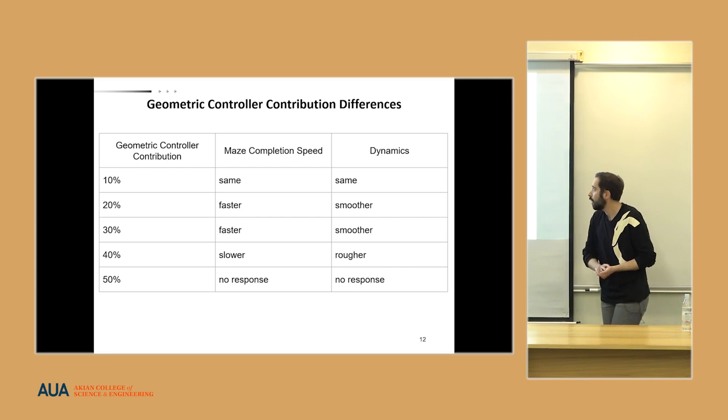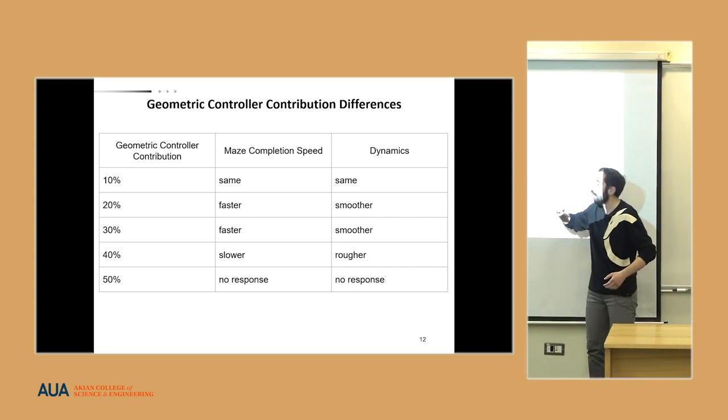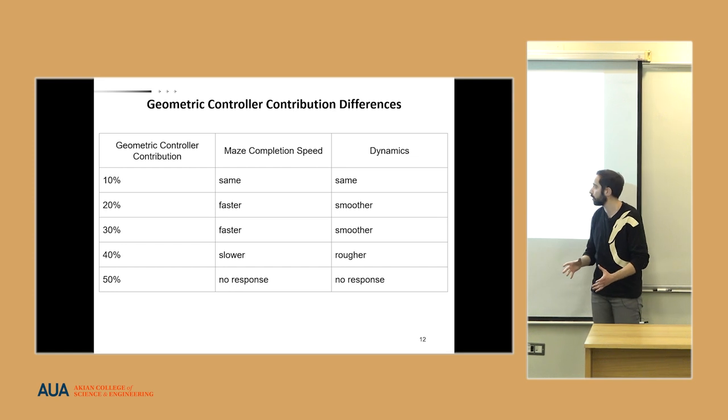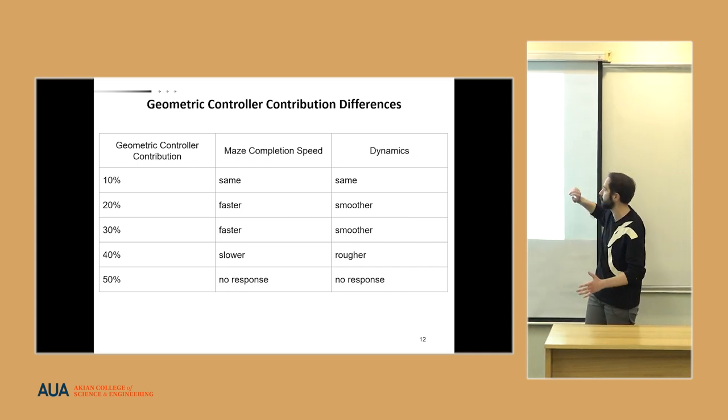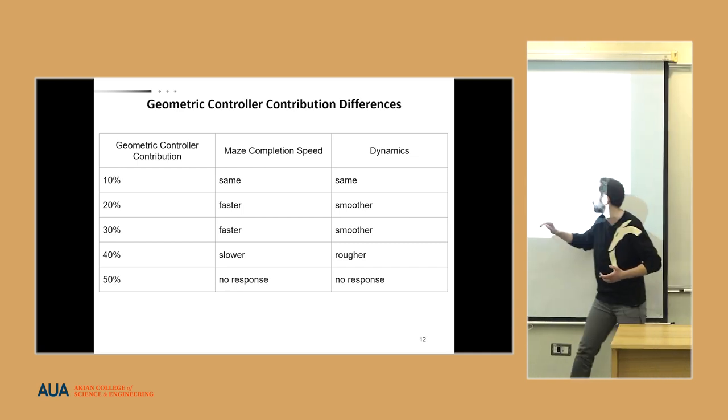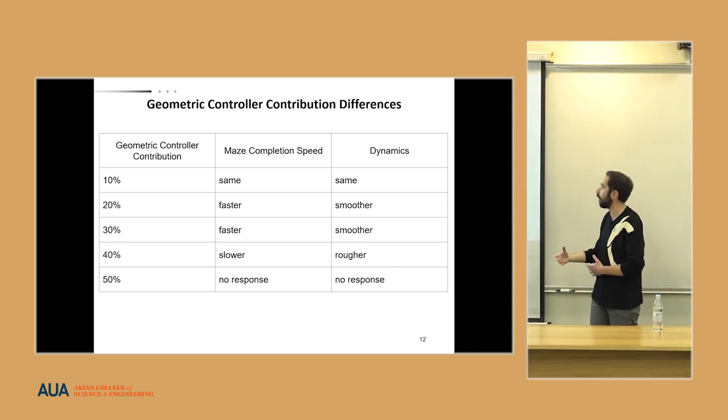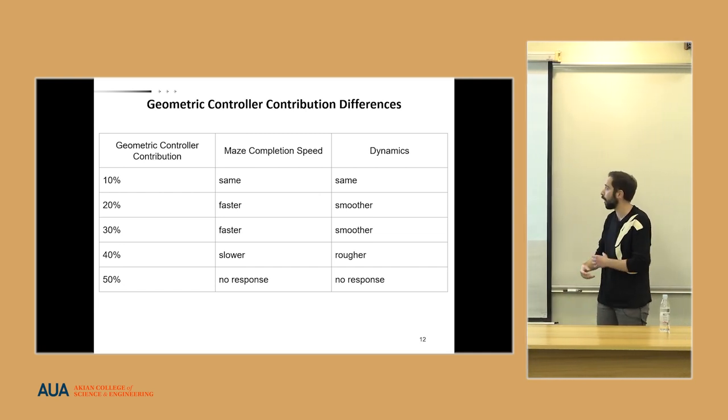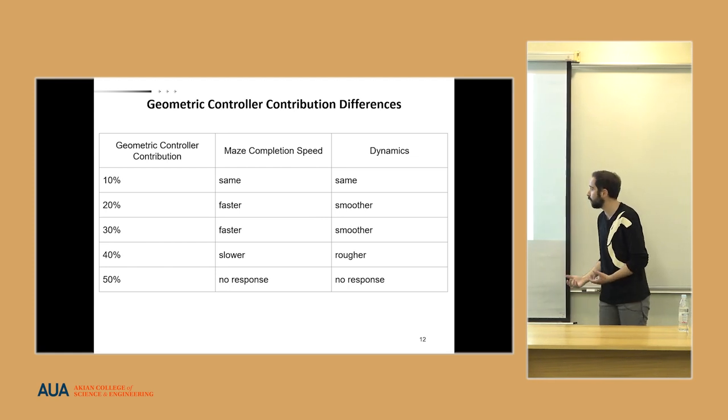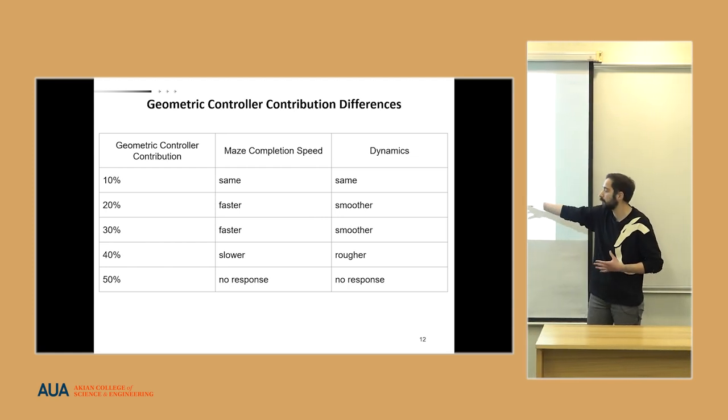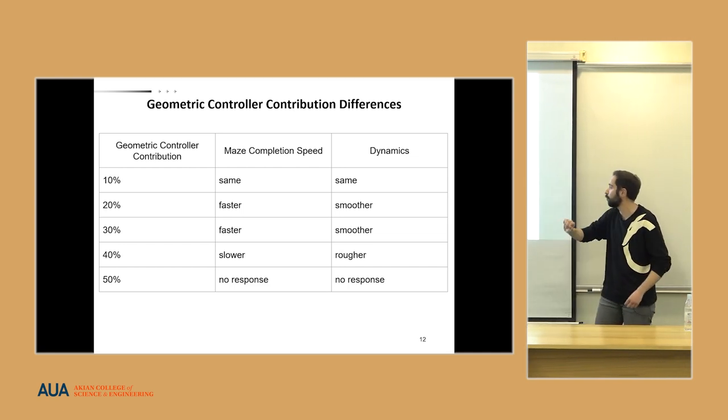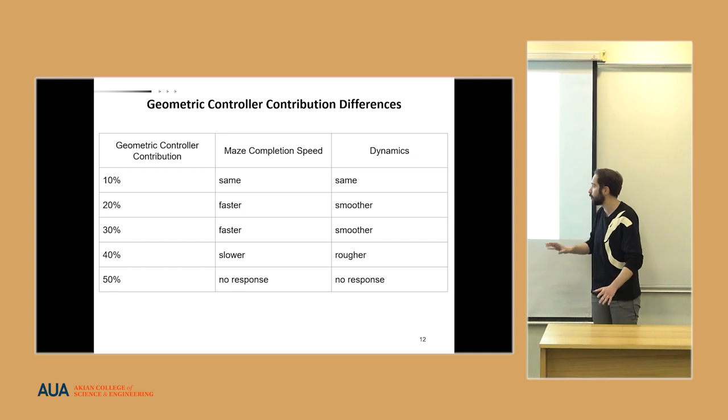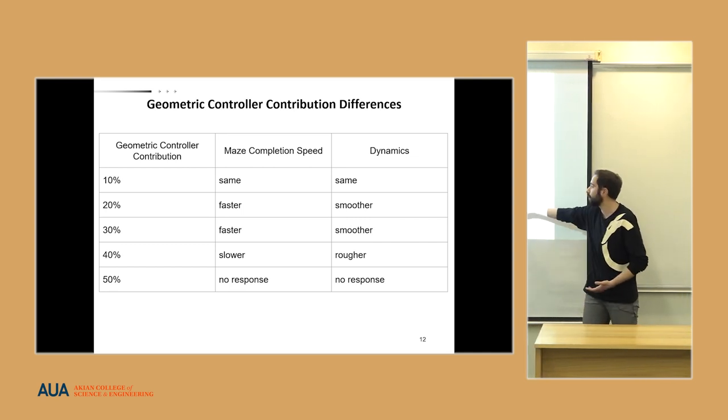With 10 percent, we can say that it has similarities with joystick, with the same speed and dynamics. However, with 20 and 30 percent, we can see high influence on our dynamics and the speed of our vehicle. With 40 percent, it took a lot of time to reach the endpoint of our maze, and the dynamics were rougher. It was hard to control with the joystick. With 50 percent, we didn't have any response from the vehicle.